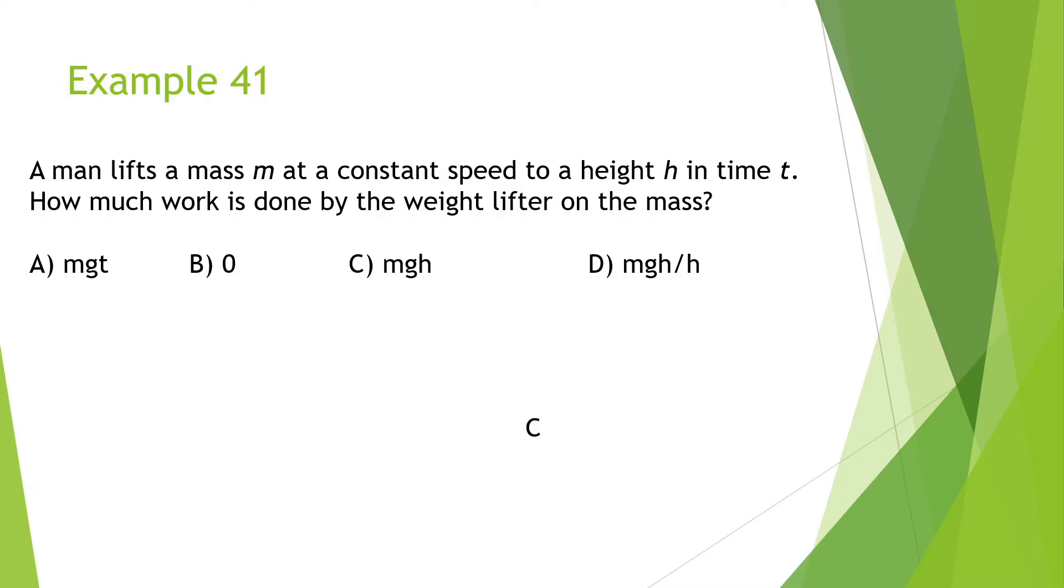A man lifts a mass m at a constant speed to a height h in a time t. How much work is done by the weightlifter on the mass? So what we should see is we have this mass. We're lifting this up with a constant velocity, meaning acceleration is zero.